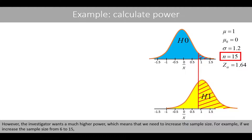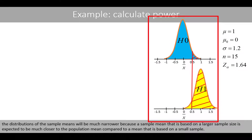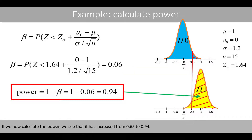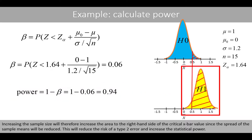However, the investigator wants a much higher power, which means that we need to increase the sample size. For example, if we increase the sample size from 6 to 15, the distributions of the sample means will be much narrower because the sample mean based on a large sample size is expected to be much closer to the population mean compared to a mean based on a small sample. In addition, the critical x-bar value is reduced from 0.8 to 0.51. If we now calculate the power, we see that it has increased from 0.65 to 0.94. Increasing the sample size will therefore increase the area to the right-hand side of the critical x-bar value since the spread of the sample means will be reduced. This will reduce the risk of a type 2 error and increase the statistical power.